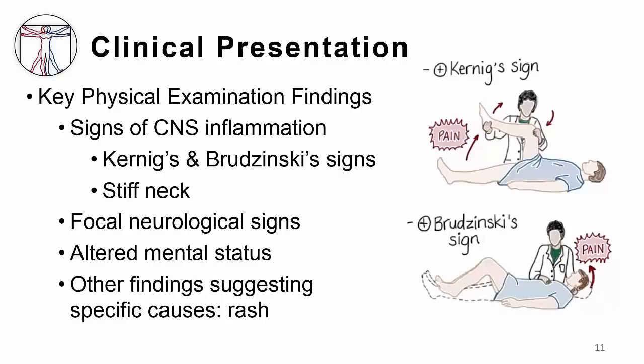When we do the physical exam, we're really focusing on looking for evidence of meningeal irritation. As shown in the cartoon, when we extend the leg at the knee or flex the neck, we stretch the meninges and cause pain. Those are the Kernig's and Brudzinski's signs, which we use to look for meningitis. You're doing the same thing if you ask the patient to touch their chin to their chest — again stretching the meninges. We look for focal neurologic signs, mental status, and do a complete physical exam looking for other clues such as rashes.